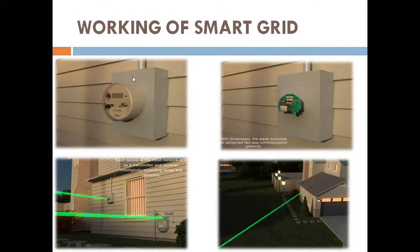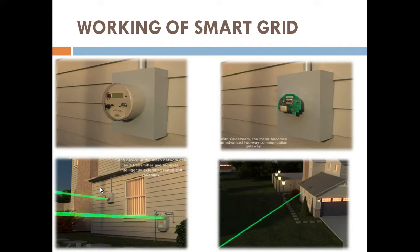This is how working on smart grid takes place. There is a house and this is how the gadget has been placed — with this grid stream, the meter becomes an advanced communication device. Each device in this mesh network acts as a transmitter and receiver, intelligently extending range and reliability.